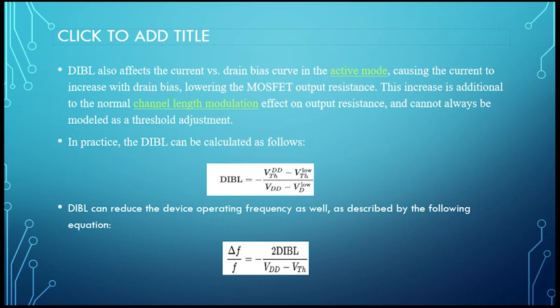In practice, DIBL can be calculated as follows: DIBL can reduce the device operating frequency as well, as described by the following equation: Δf/f equals 2×DIBL divided by VDD minus VTH, where VDD is the supply voltage and VTH is the threshold voltage.